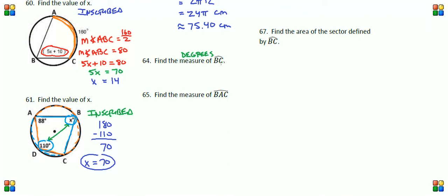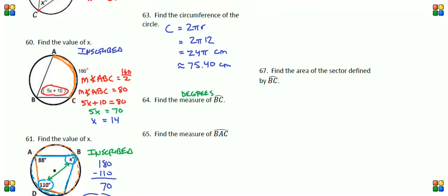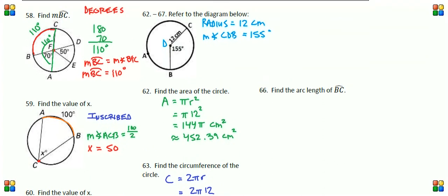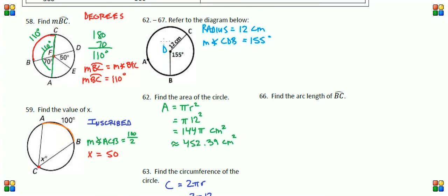Remember class, the degrees of a circle are 360. So let's see if we can figure out the measure of arc BC. Well, the good news is we've pretty much done that same thing in question number 58. We have a central angle CDB, which is 155 degrees. And that means the measure of the intercepted arc CB is also equal to 155 degrees.